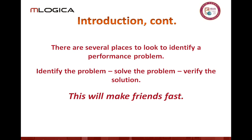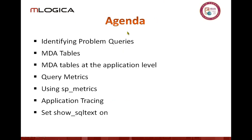Identifying where it is, coming up with the solution, and then validating that you've actually found it — that validation is very important, because it can be embarrassing if you say you've got it figured out, put the fix in, and they still have the same problem. The agenda for this section: we're going to identify the problem queries, figure out how to identify what they are. Fixing the problem queries is beyond scope — I have a separate five-day class for that. Specifically just identifying them, using a couple of different approaches: the MDA tables, query metrics, the SP metrics command, some application tracing, and a little bit of show text.